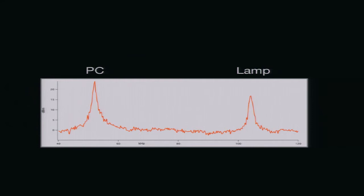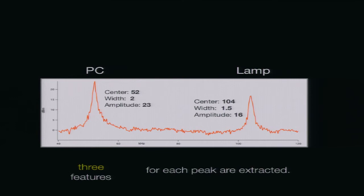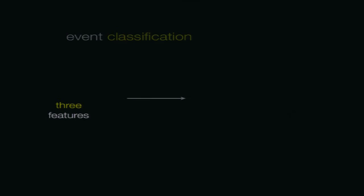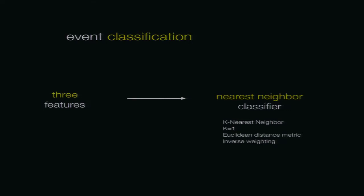Looking closely at the spectrogram: the PC resonates at about 52 kilohertz with a bandwidth of about 2 kilohertz and a strong amplitude; the lamp resonates at about 104 kilohertz with smaller bandwidth and less energy. These three features — center frequency, bandwidth, and amplitude — are sufficient for characterizing EMI from many different devices. We extract these features for each peak and put them through a nearest neighbor classifier using Euclidean distance in feature space, very similar to the gas sense approach.